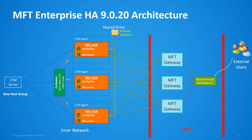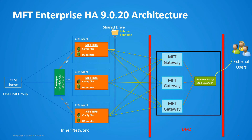Let's take a look at this example MFT Enterprise environment that consists of three MFT hubs and two gateways. External users will connect through a reverse proxy or a load balancer such as F5, provided by your infrastructure team, that balances between the MFT gateways which sit in the DMZ network. Each gateway is aware of all the hubs in the MFT Enterprise HA cluster, and each hub is aware of all the gateways.